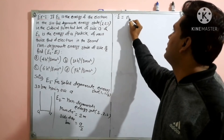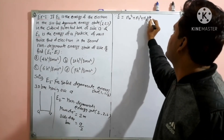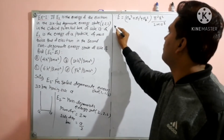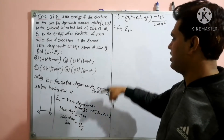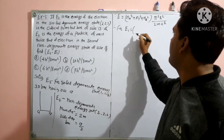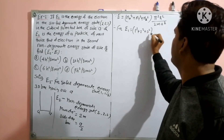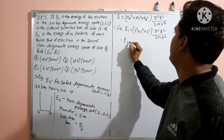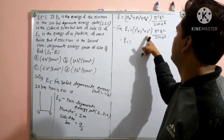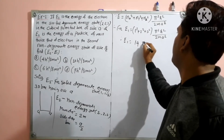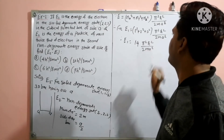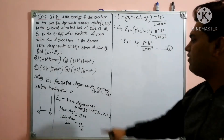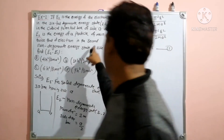We know the energy formula for a 3D box: E = (nx² + ny² + nz²) × π²ℏ²/(2mA²). For case 1, E1 with quantum numbers (1,2,3): E1 = (1² + 2² + 3²) × π²ℏ²/(2mA²) = (1 + 4 + 9) × π²ℏ²/(2mA²) = 14π²ℏ²/(2mA²). This is equation number 1.